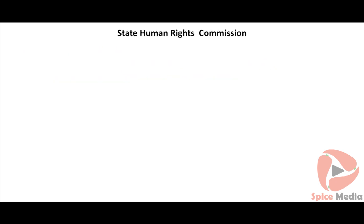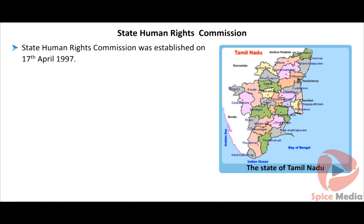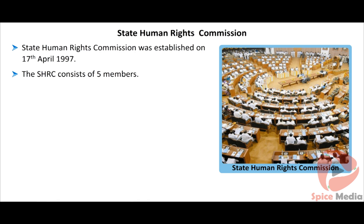The State Human Rights Commission was established on 17th April 1997. It consists of five members: a retired Chief Justice as chairperson, a retired judge of the High Court, and a retired person or a person in service as a District Judge of the state, along with two members who have practical knowledge or experience in matters related to human rights.